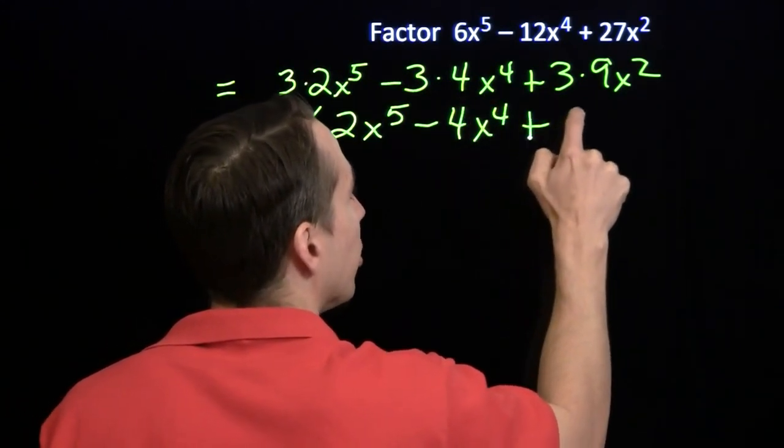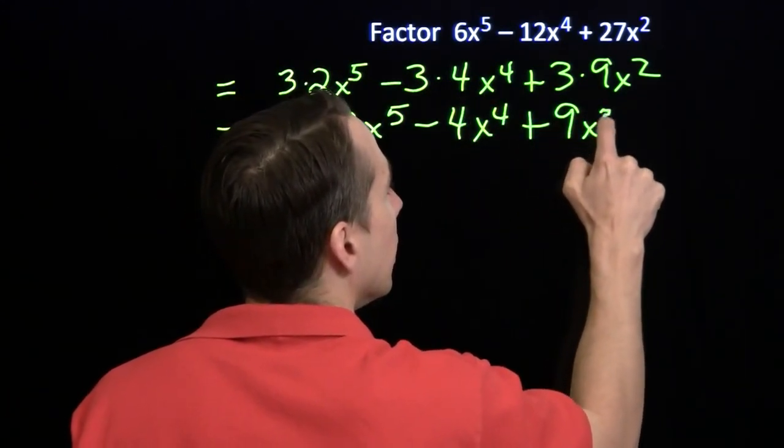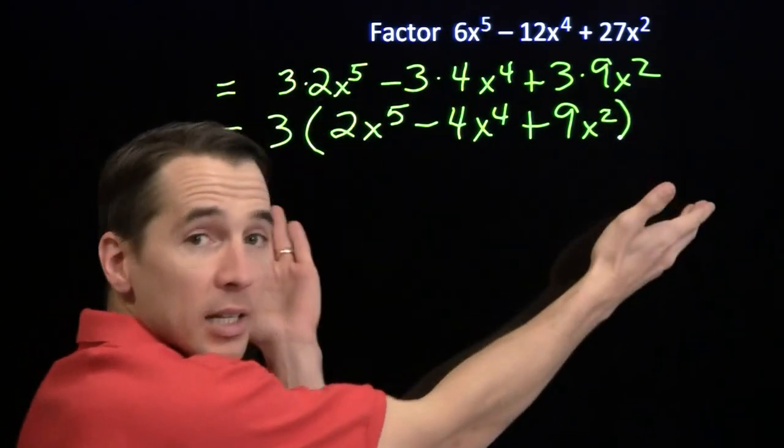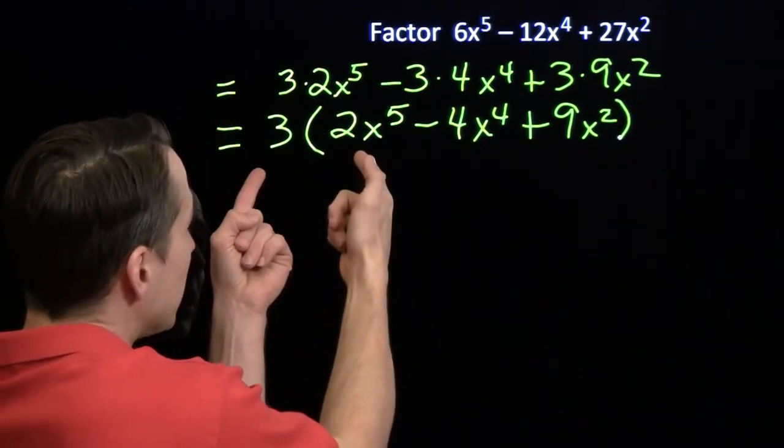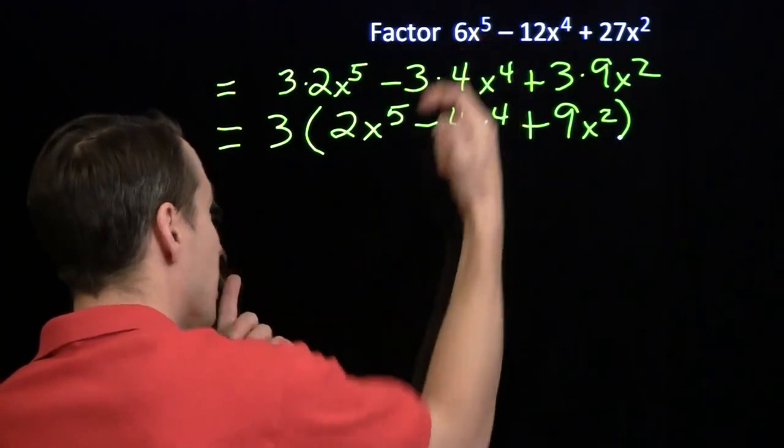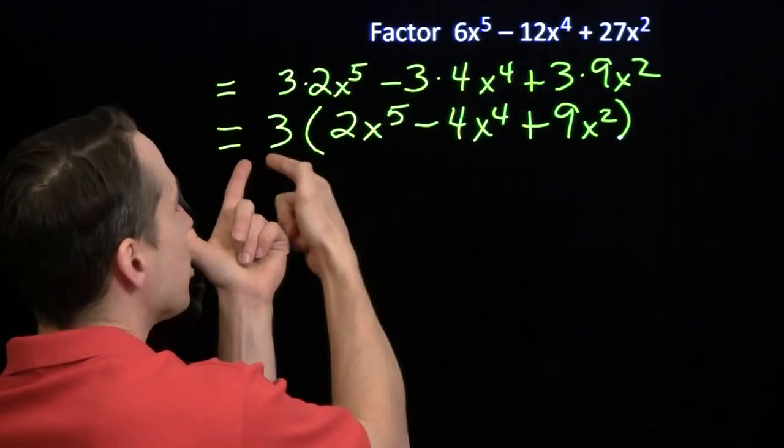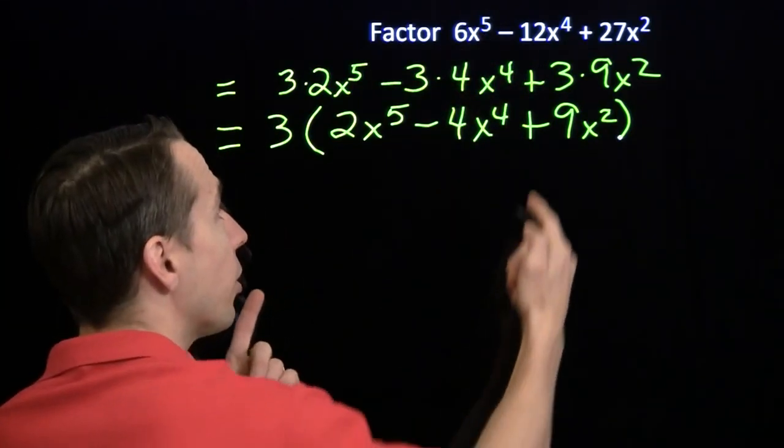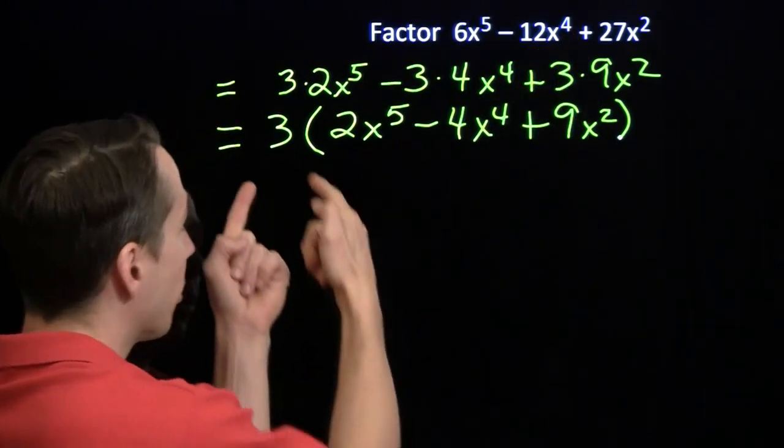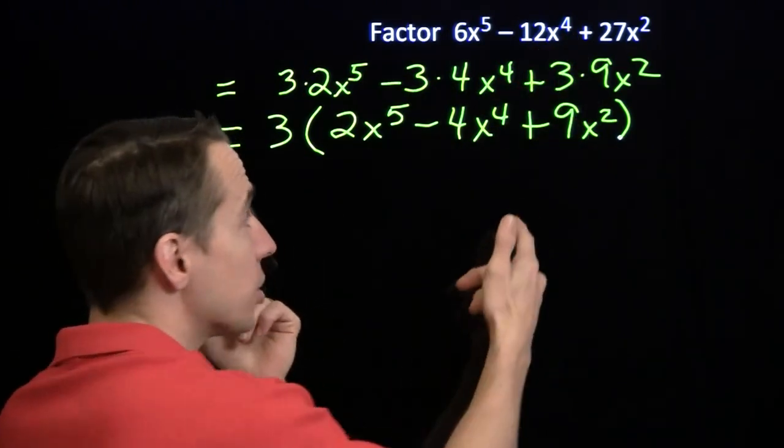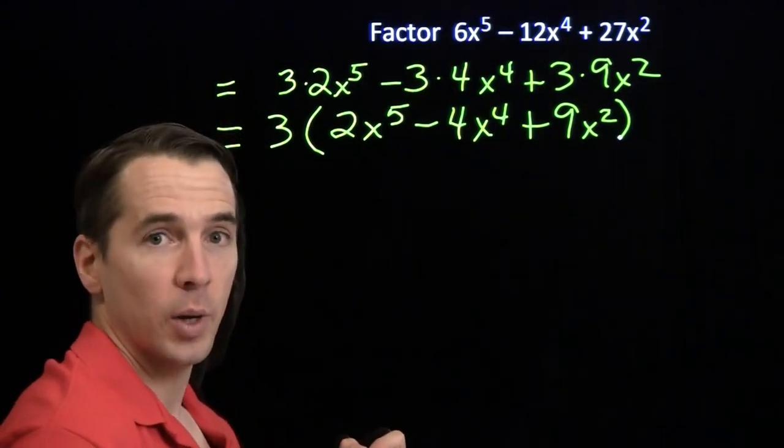And again, we can check ourselves, make sure we did this correctly, and think about what happens if we expanded this product. We go 3 times 2x to the 5th, that gives us 6x to the 5th minus 3 times 4x to the 4th minus 12x to the 4th. 3 times 9x squared, 3 times 9 is 27, 27x squared.